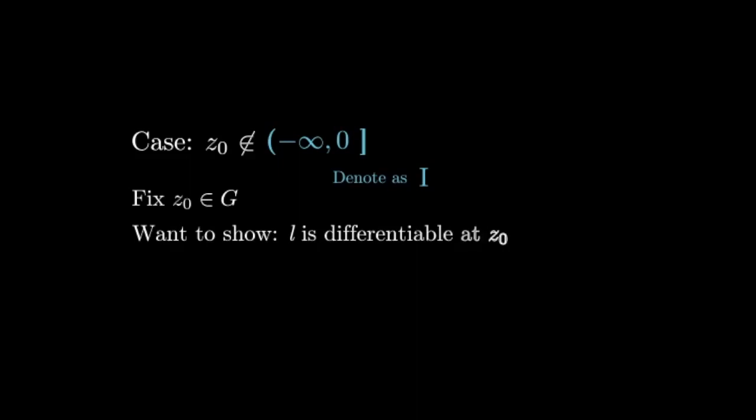Let's prove this and focus on a case where z0 is not an element of the interval from negative infinity to 0 inclusive. Fix z0 in G and let I be the interval from negative infinity to 0. We want to show that l is differentiable at z0.